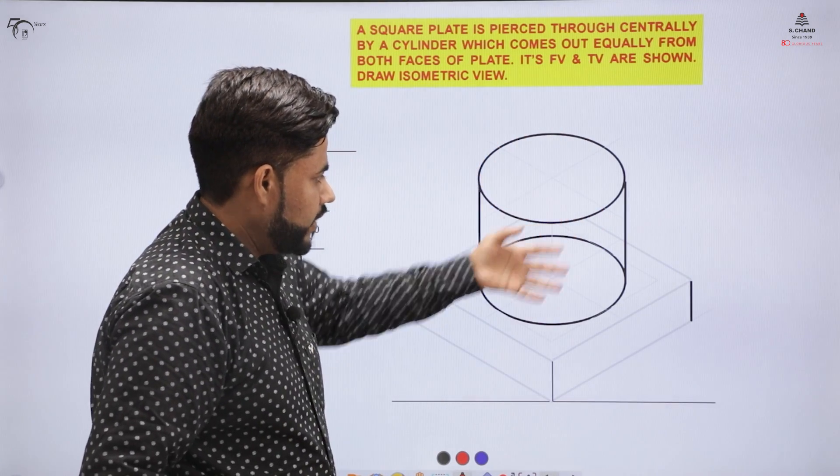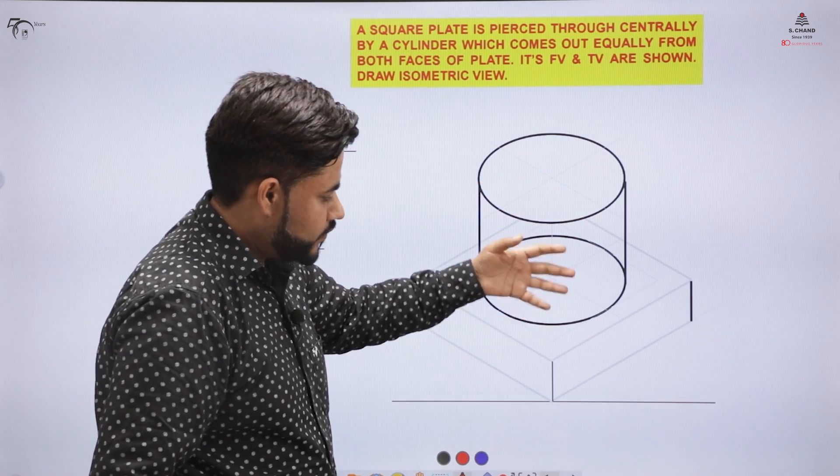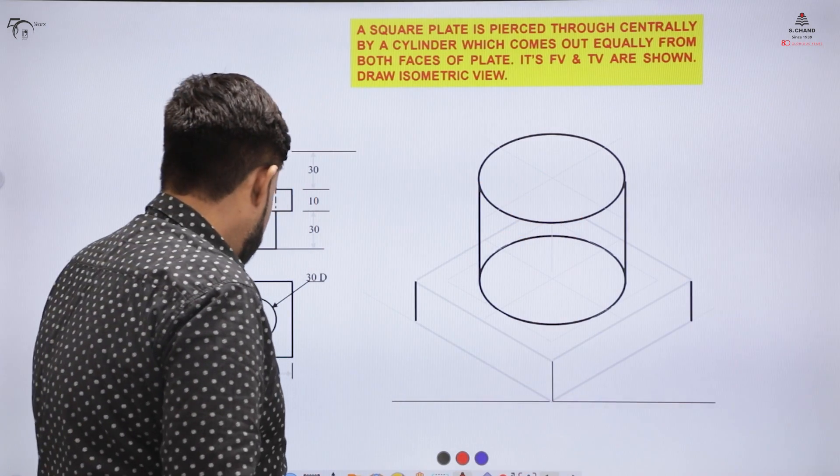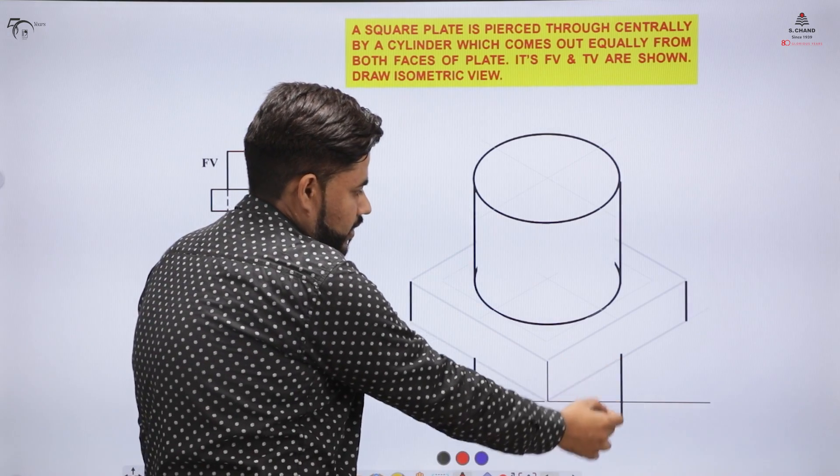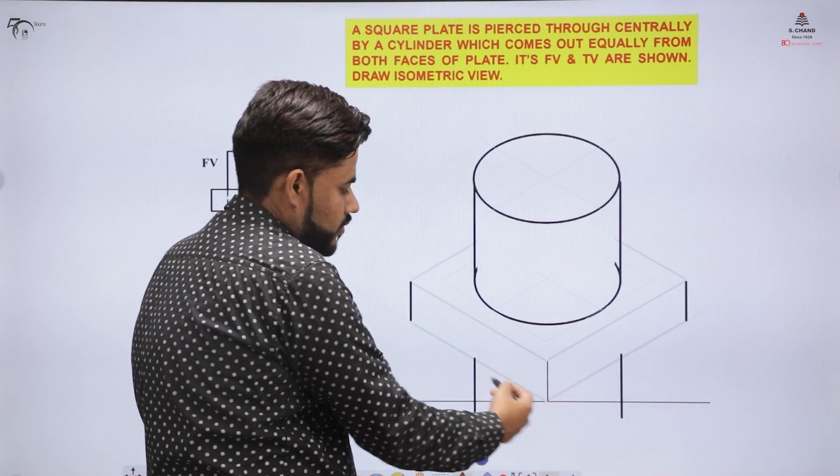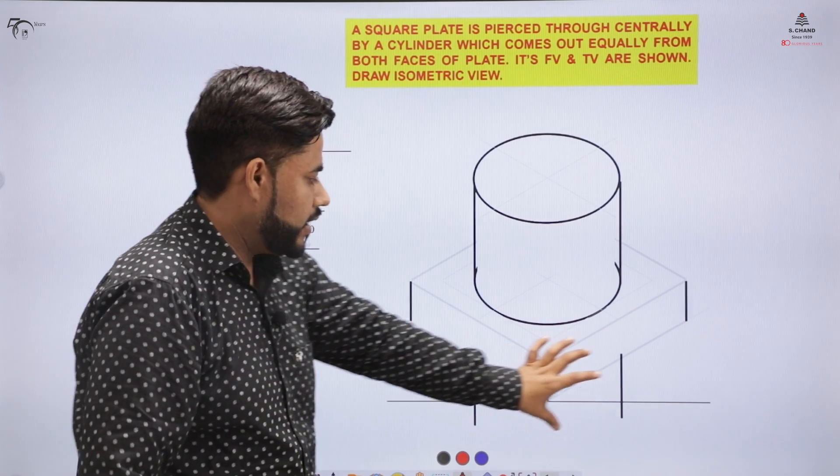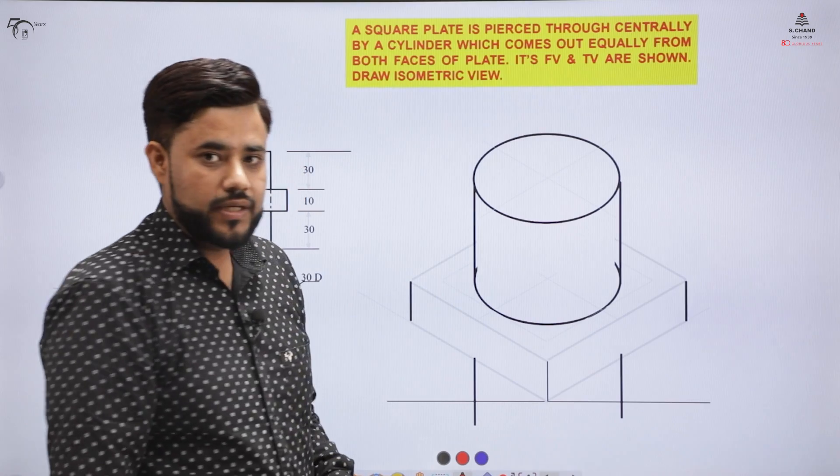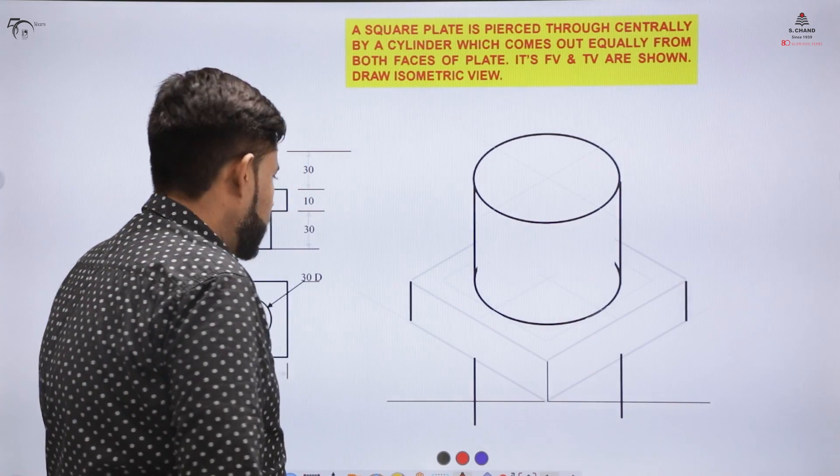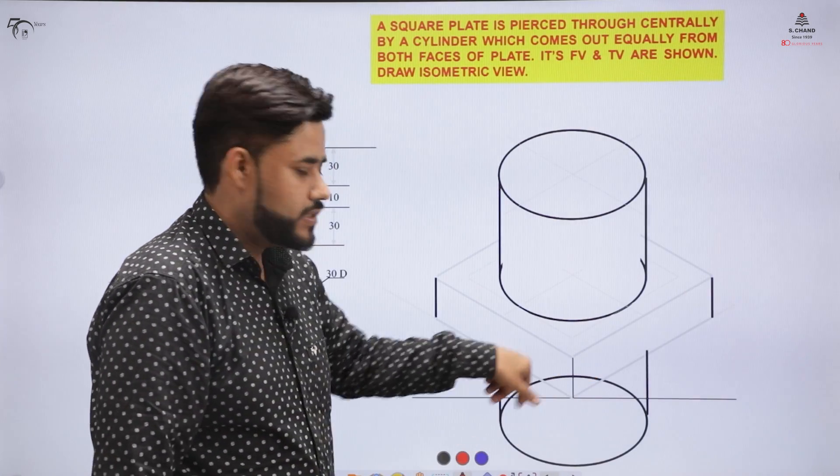Similar fashion we have to repeat the same process for the below aspect as well. For the below aspect we have to increase the length to 30 mm and below region we also have to create the ISO circle.